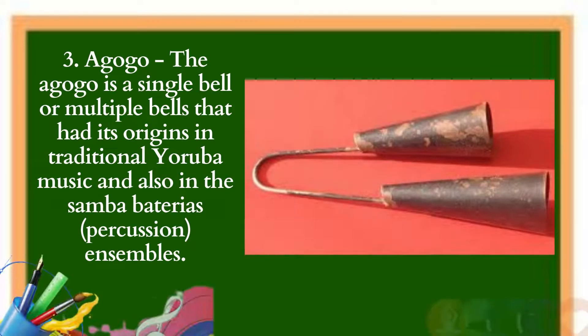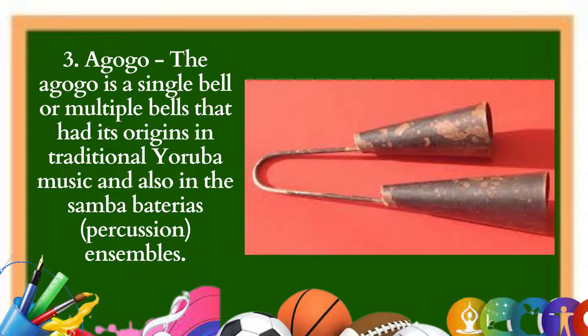3. Ago ago: The ago ago is a single bell or multiple bells that had its origins in traditional Yoruba music and also in the samba baterias percussion ensembles. The ago ago may be called the oldest samba instrument. Based on West African Yoruba single or double bells, it has the highest pitch of any of the bateria instruments.